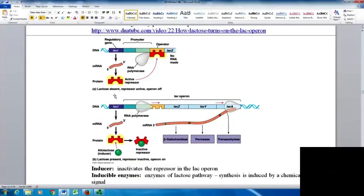When lactose is absent, the repressor is active and shuts off the operon by preventing RNA polymerase from attaching. When lactose is present, it acts as an inducer, inactivating the repressor, allowing RNA polymerase to bind to the promoter and transcribe the genes.